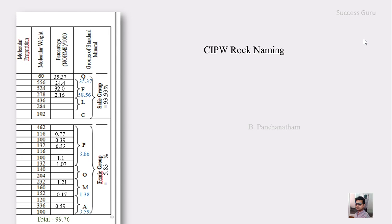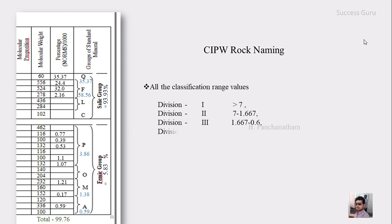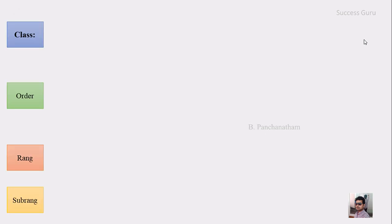You should remember the subdivisions and their ranges of numbers. If the answer is more than 7, it falls in division number 1. If the answer ranges from 7 to 1.667, it is in division 2. If it is from 1.667 to 0.6, it will be in division 3. If it is in the range of 0.6 to 0.143, it is in division 4. And if it is less than 0.143, it is in division number 5. Remember these numbers, as they continue throughout the entire calculation.